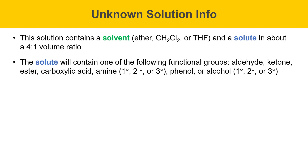The solute will contain one of the following functional groups: an aldehyde, a ketone, an ester, carboxylic acid, or an amine — that can be a primary, secondary, or tertiary amine, which refers to the number of carbon groups attached to the nitrogen. It can be a phenol, or it could be an alcohol — primary, secondary, or tertiary — and that refers to the number of carbon groups attached to the carbon that bears the OH group.